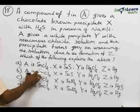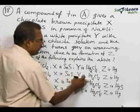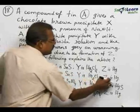Then B, A is SnCl4, X is SnS, Y is Hg2Cl2, Z is mercury.